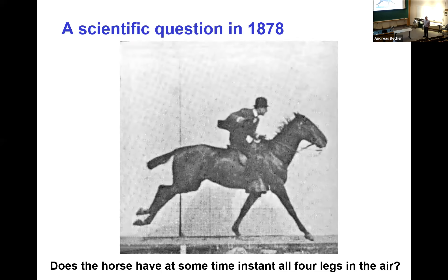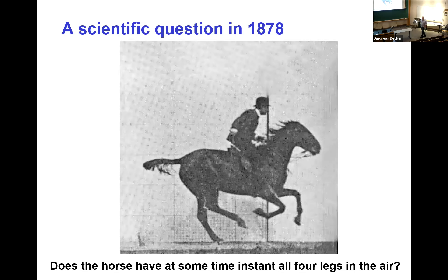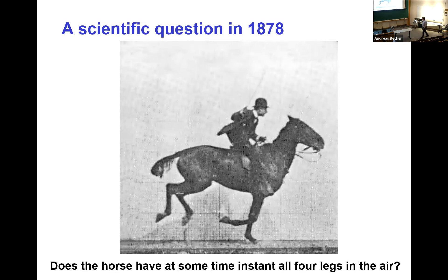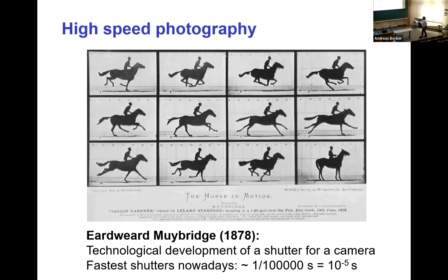It was Edward Muybridge who developed at that time a camera shutter with which you could actually resolve this question. And if you look at the snapshots, you can see that the horse actually has all four legs in the air. This is where it started: we want to resolve motions so fast that our eye cannot do it, and at that time the development of a faster camera shutter was the solution.